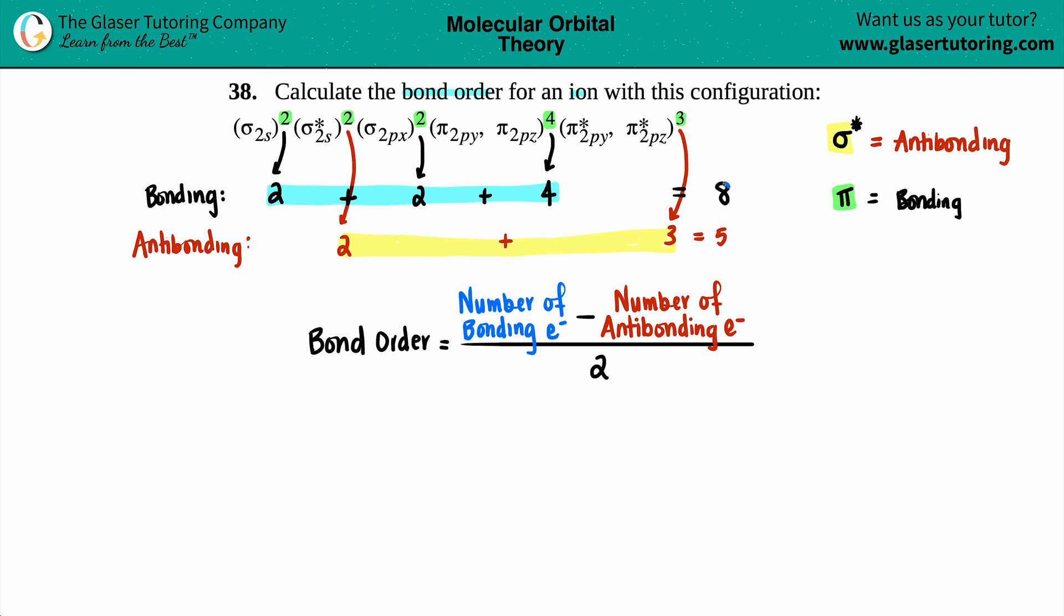Bond order equals—the bond order equals something minus something divided by two. That's standard. My bonding electrons is eight, and I'm going to subtract that from the five.